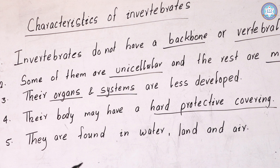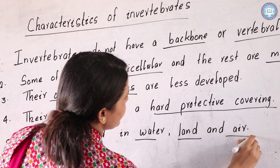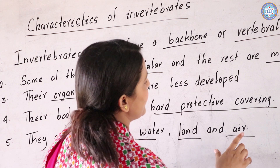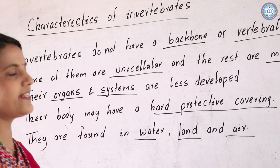The fifth characteristic is: they are found in water, land, and air. Invertebrates can be aquatic animals living in water, terrestrial animals living on land, or they can fly and live in the air. That is a key characteristic of invertebrates.